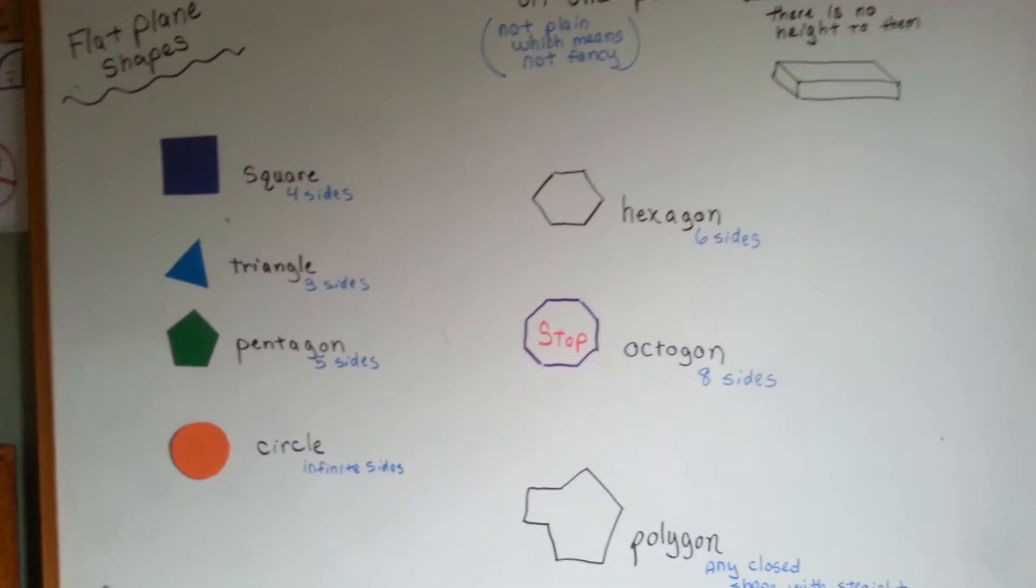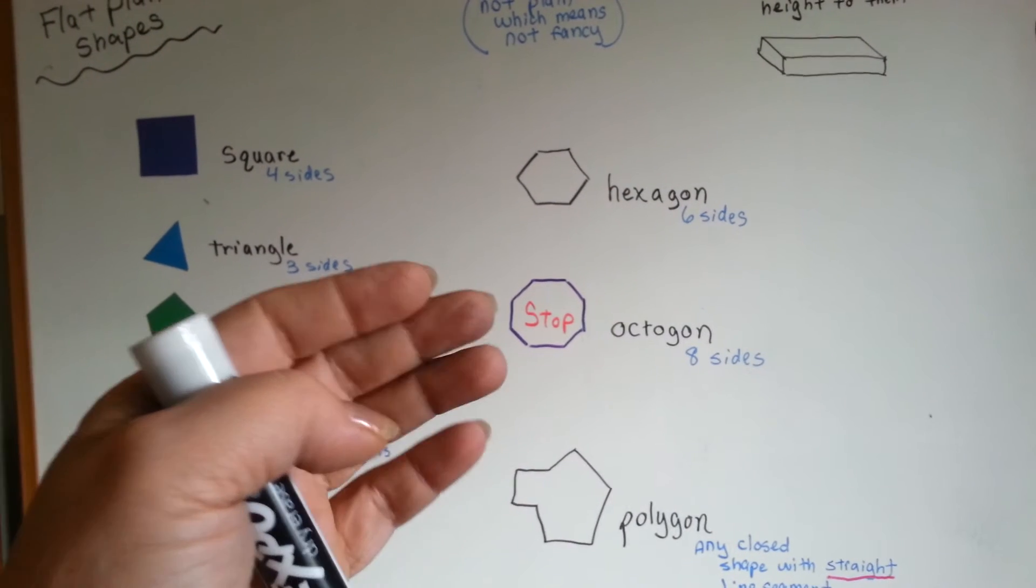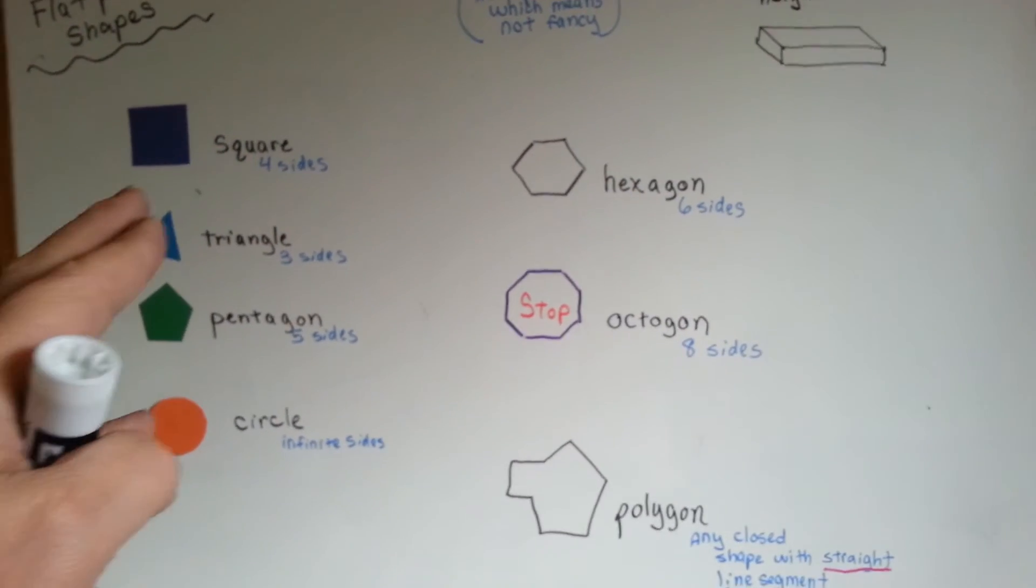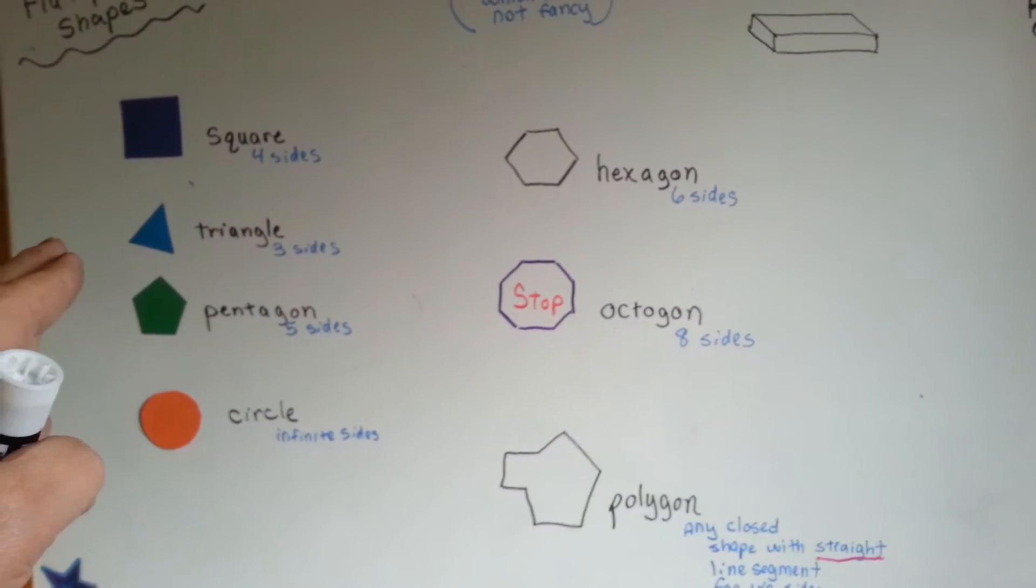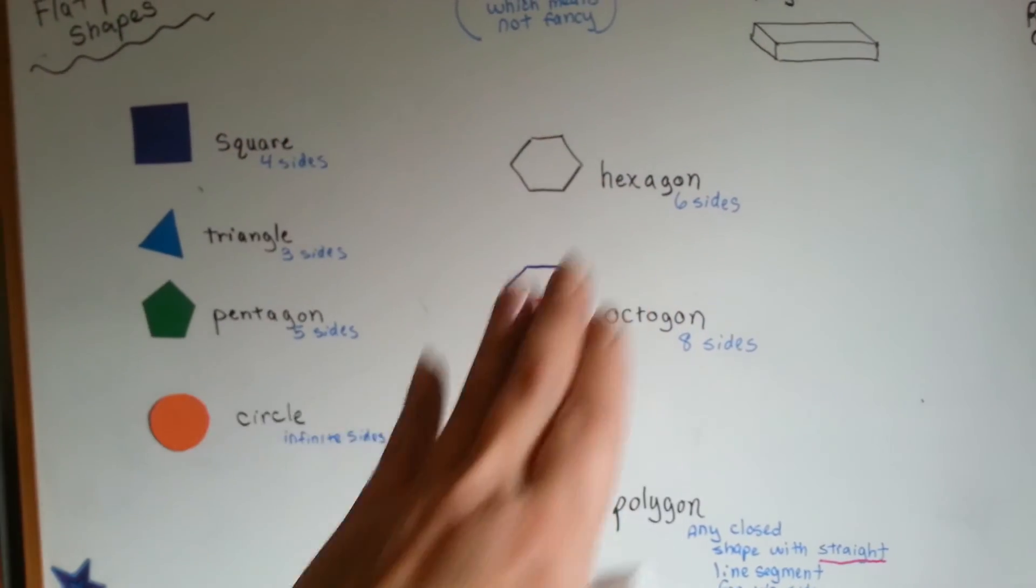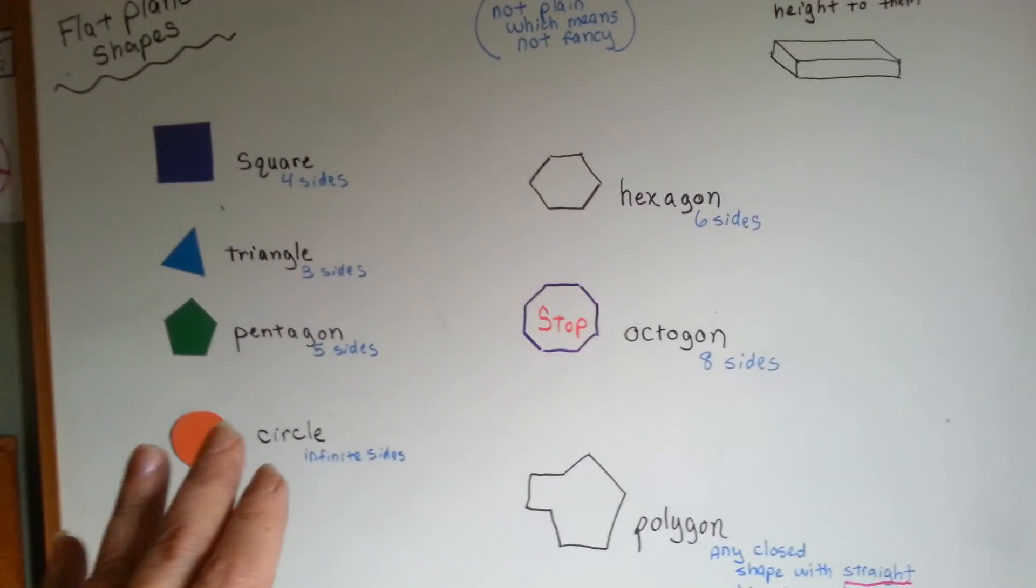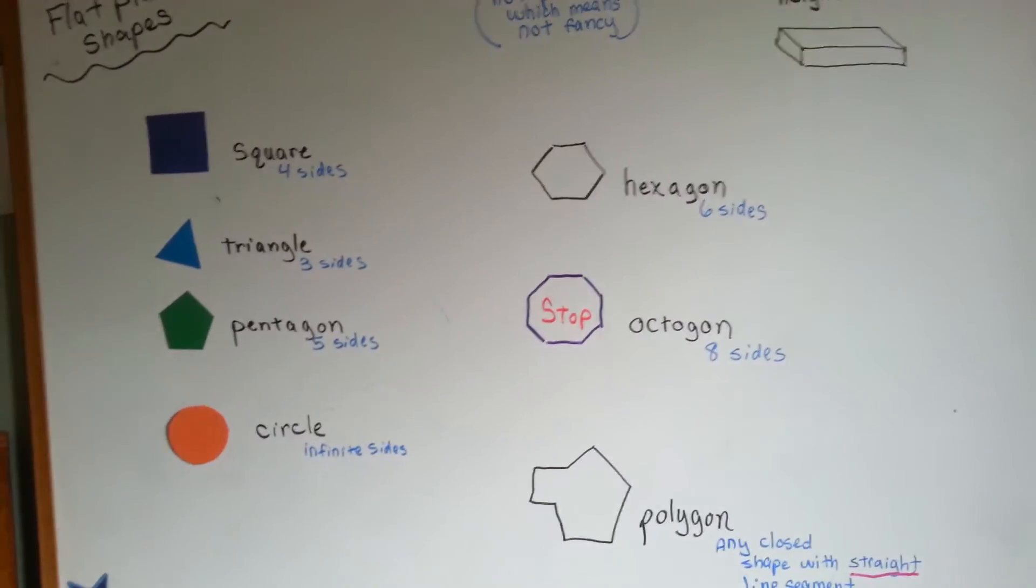Now, there are lots of shapes. We could say a dodecahedron—all these other shapes are going to come out as you get farther in school. But right now we're just going to deal with these plane shapes right here that are flat on one level. There's no height to them. They just have sides.